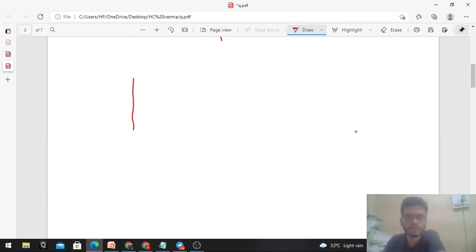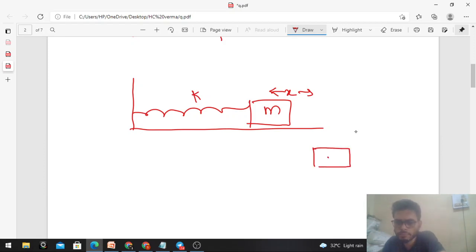Let me give you an interesting problem to think about. Suppose you have a spring connected to a block with mass M and spring constant K, and you stretch the spring by some distance X. Now if you draw the free body diagram of this block, the spring will apply a force on this block in the leftward direction with magnitude K into X.